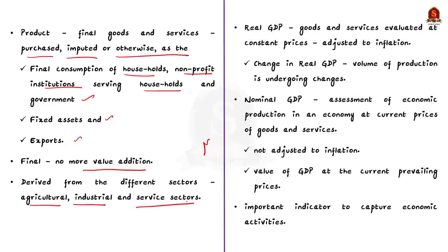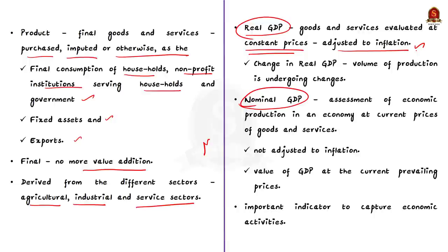GDP is reviewed from two angles: real GDP and nominal GDP. Real GDP evaluates goods and services at constant prices — it is the economic output adjusted to inflation, reflecting the value of all goods and services in a given year adjusted for price changes. A change in real GDP confirms a change in the volume of production. Nominal GDP assesses economic production using current prices of goods and services, not adjusted to inflation — it is simply the value of GDP at current prevailing prices.